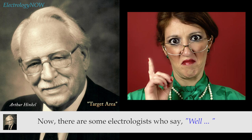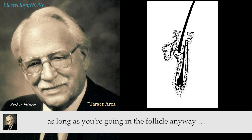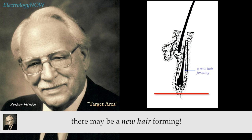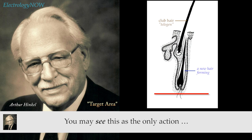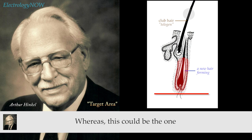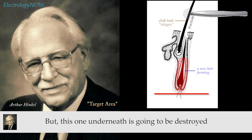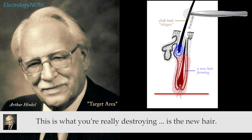Some electrologists say they insert shallow on the first pass because so many hairs are shallow anyway — why make deep insertions? The reason for inserting deeper is: as long as you're going into the follicle anyway, why not go down? There may be a new hair forming underneath. Not every follicle with a club hair is the only action going on there — sometimes the follicle decides to set another hair in motion underneath. So you may have a deeper hair in action while the visible one is what you have your tweezers on. With a deep insertion, the upper hair won't release cleanly, but the one underneath will be destroyed too. That lower one is what you're really destroying — the new hair.